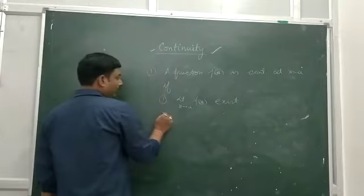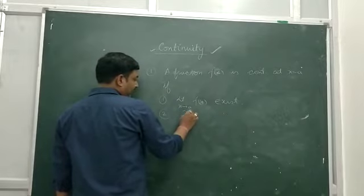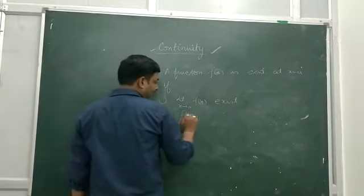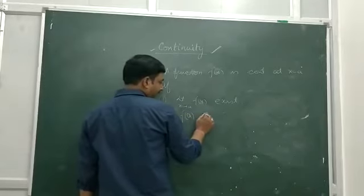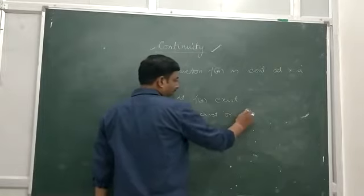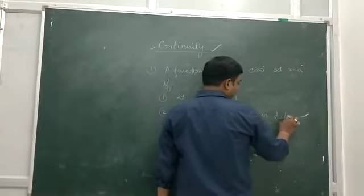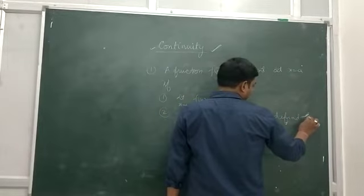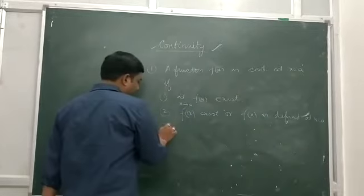Number 2, the value of the function is defined at x equal to a, means f(a) exists. Or you write, f(x) is defined at x equals a.